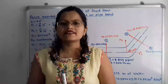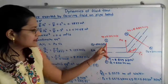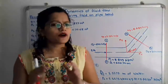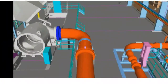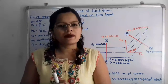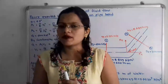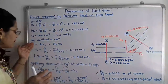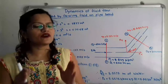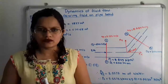Since the pipeline is horizontal and the bend is along that horizontal line, the datum heads are equal — z1 = z2 — and they cancel from both sides. Bernoulli's equation reduces to: p1/(ρg) + V1²/(2g) = p2/(ρg) + V2²/(2g).